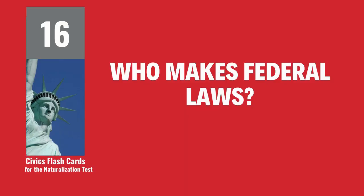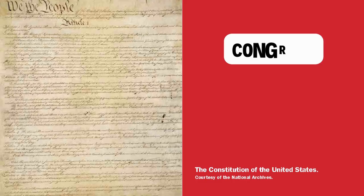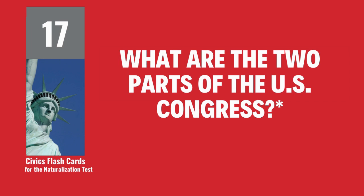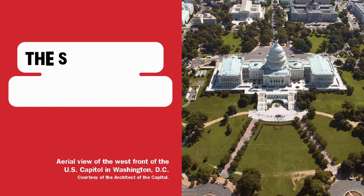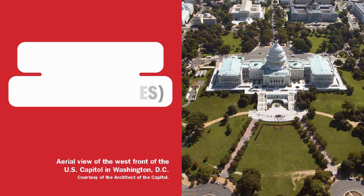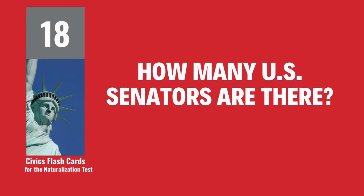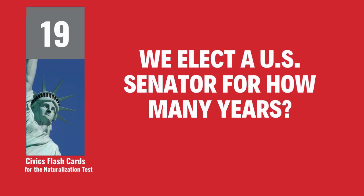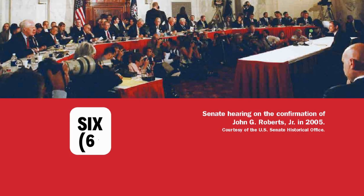Who makes federal laws? Congress. What are the two parts of the U.S. Congress? The Senate and House of Representatives. How many U.S. Senators are there? One hundred. We elect a U.S. Senator for how many years? Six.